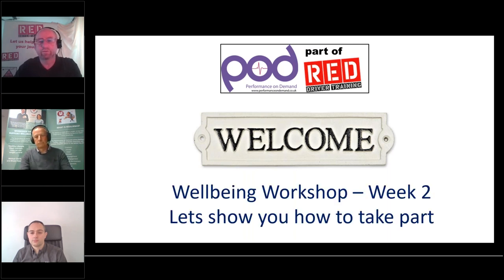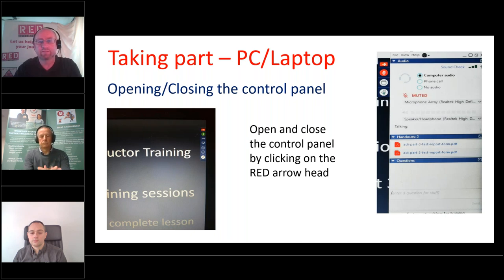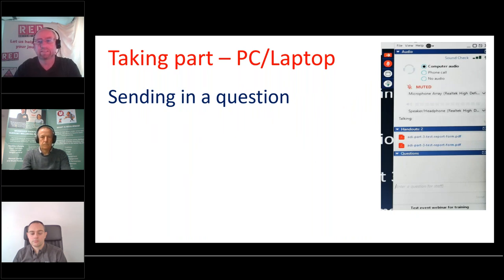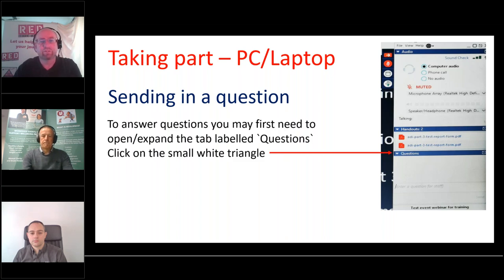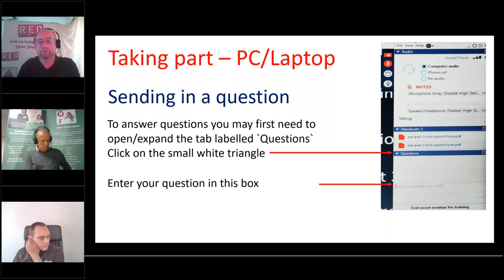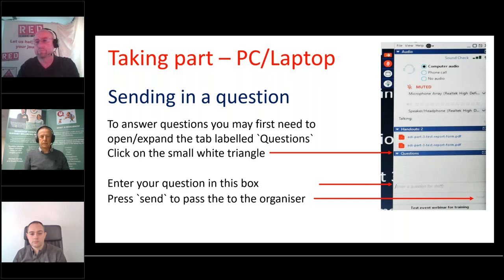So this is wellbeing workshop week two. I'm going to show you how to take part. On a laptop or PC view, you'll have your little control panel — it may be closed or shrunk into the right-hand side of the screen. Simply click on the orange arrow to open and close the panel. It will give you an opportunity to send us a question or comment regarding today's presentation. Please use the question panel for that. As moderator, I'll be looking over the questions and feeding those into our two presenters. Fill in your question and don't forget to press send.